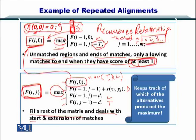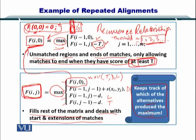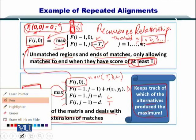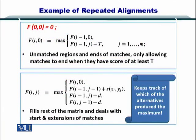In this way you can fill the rest of the matrix as well as deal with the start and extension of matches. We do this because we want to keep track of the alternatives produced by the maximum. Please remember this recurrence relationship if you want to perform repeated alignment.